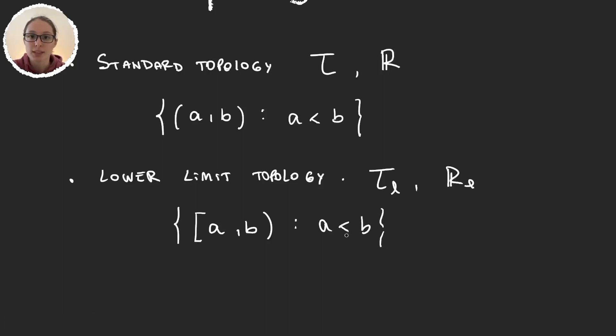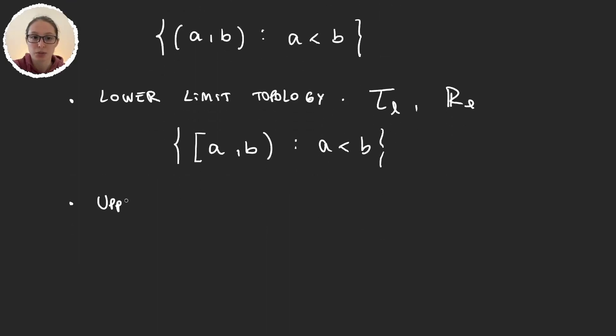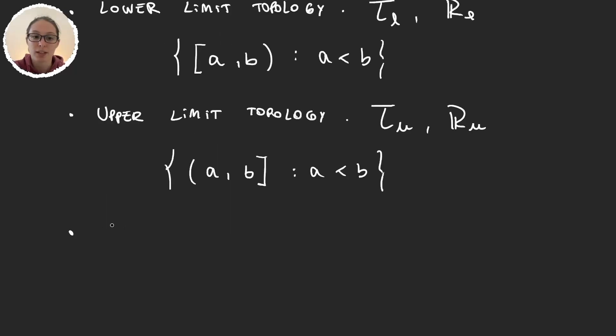So again, the basis is this one and the topology will be formed by arbitrary unions of this type of intervals and finite intersections. The next one is the upper limit topology. It is denoted as τ_u and ℝ_u, and it's obviously, you can probably imagine, it's generated by (a,b] closed in the right extreme where a is smaller than b.